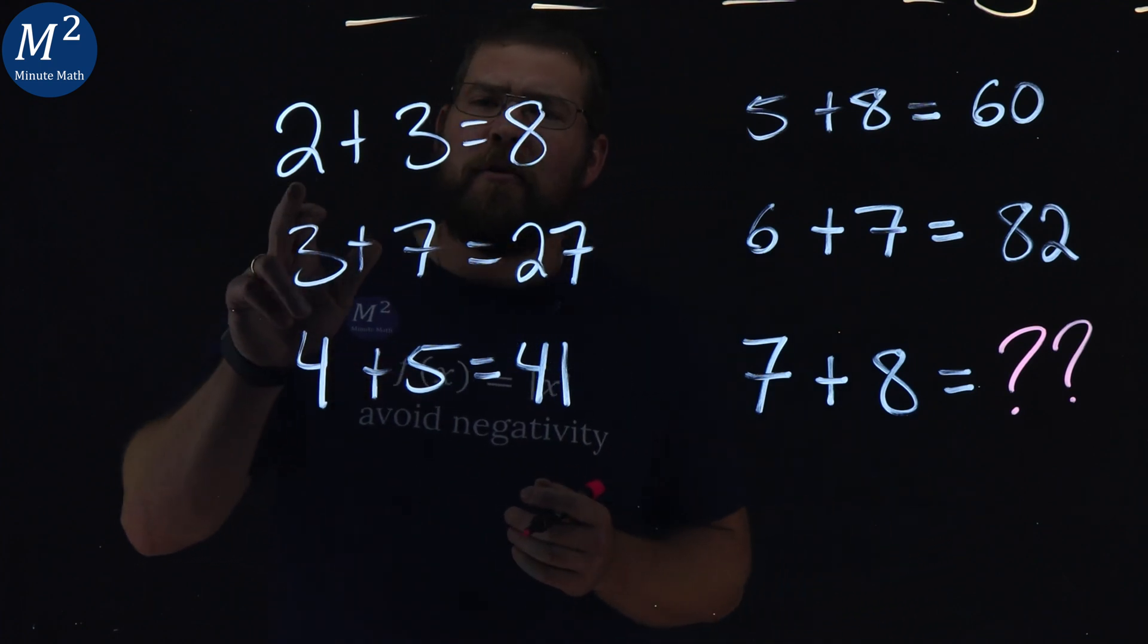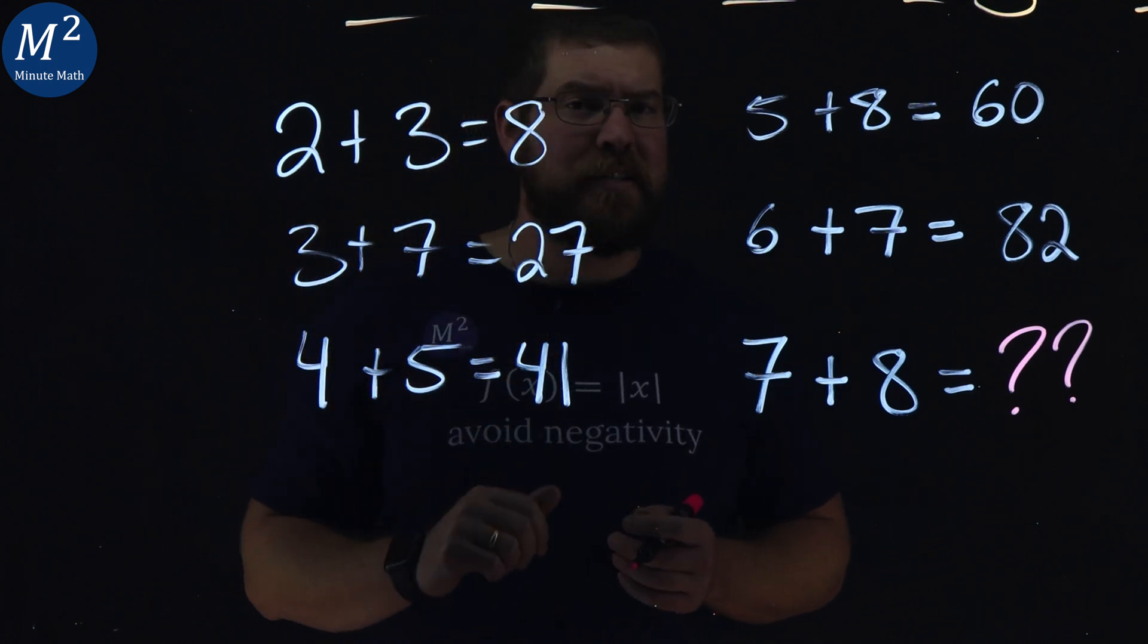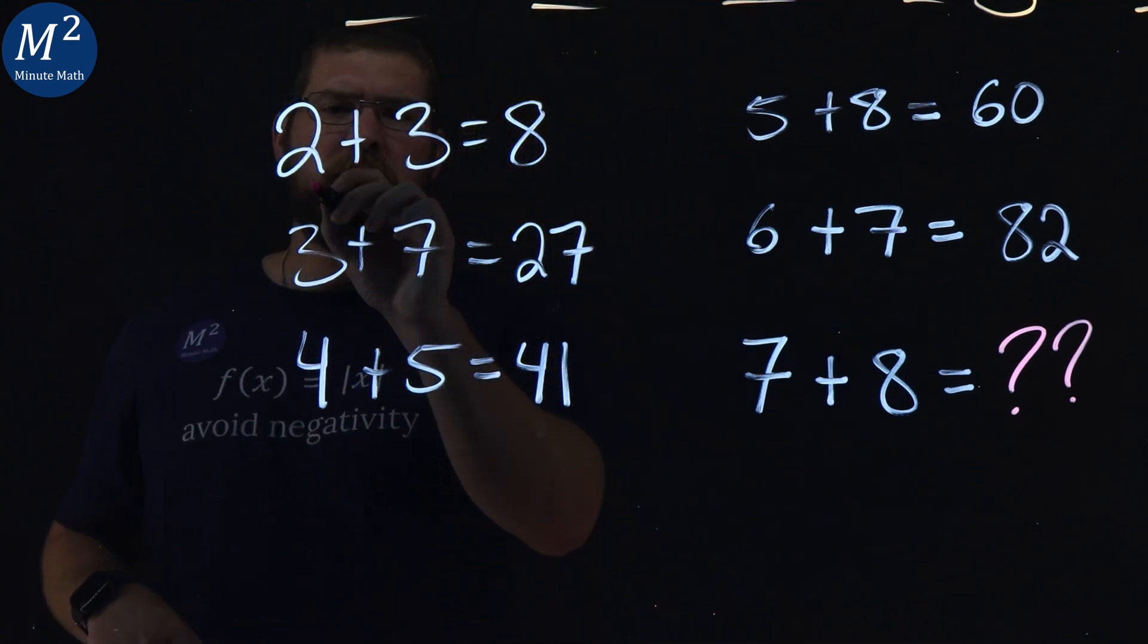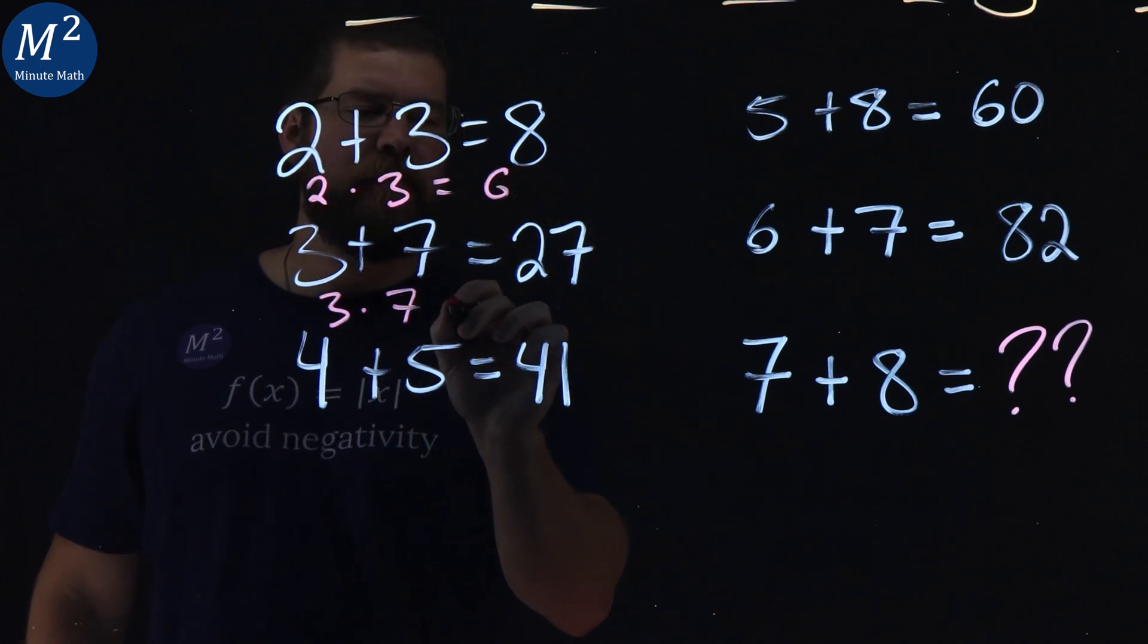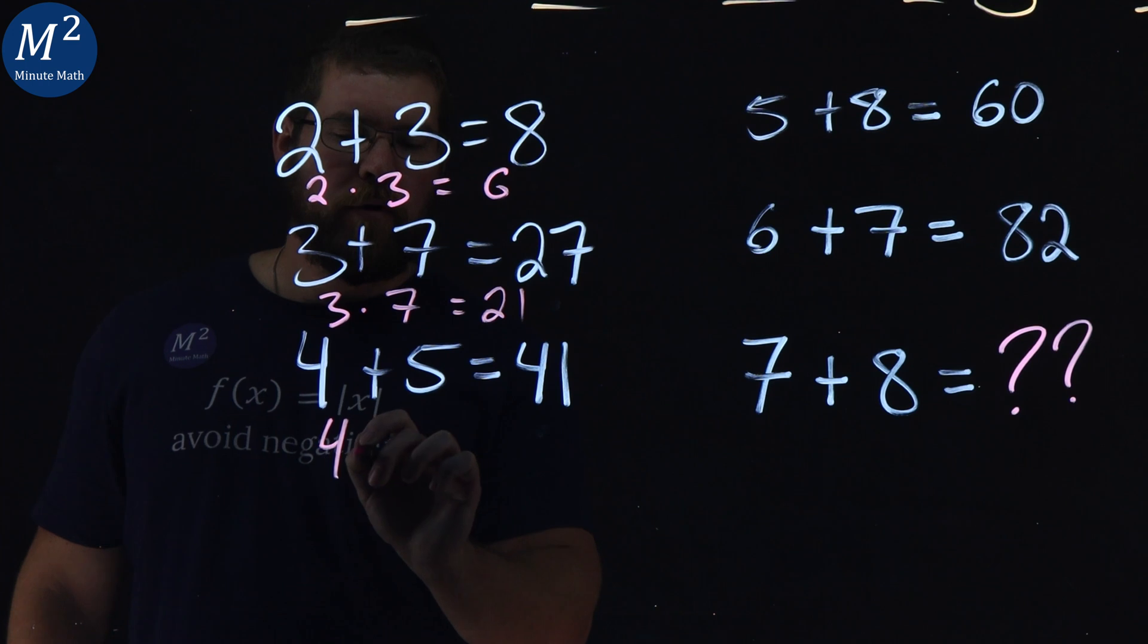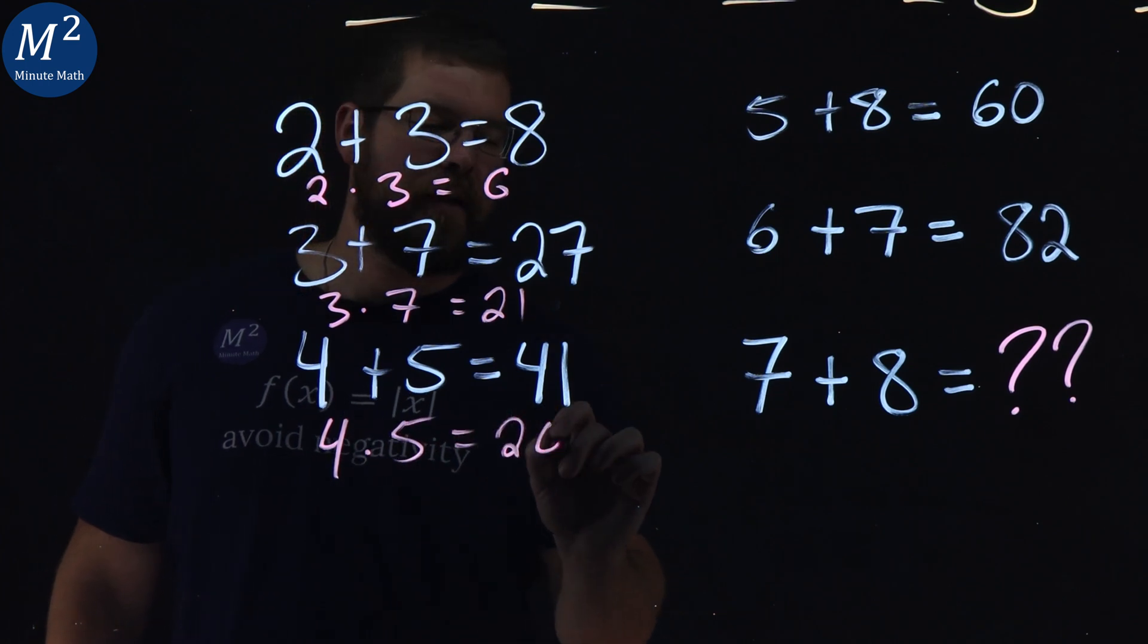While I'm doing this problem, let's see if we can multiply each one of these out. 2 times 3 is 6, 3 times 7 is 21, 4 times 5 is 20, not too bad.